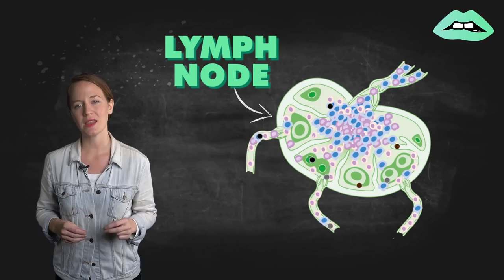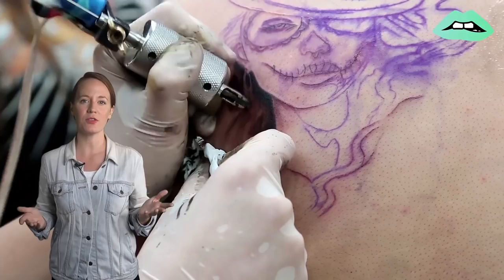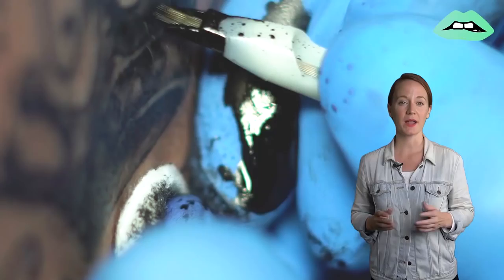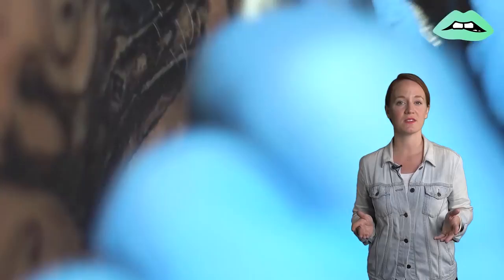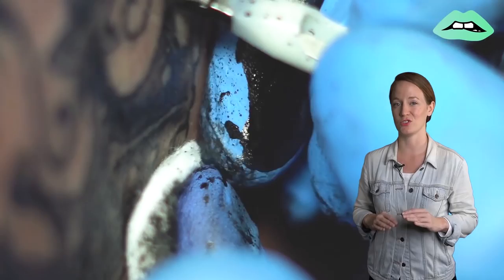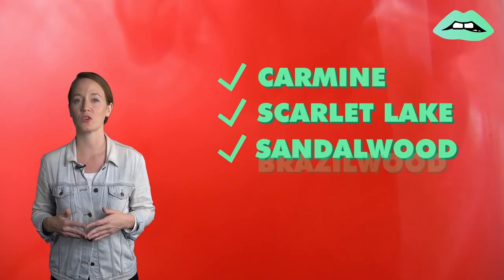So what's a health-minded person to do if they want to get a tattoo? Well, you should avoid getting a tattoo with colors derived from heavy metals. Black may be the safest permanent tattoo ink, and doctors recommend asking for black tattoo ink made of just carbon. And for red, try to find a parlor that works with non-metallic organic pigments made of things like carmine, scarlet lake, sandalwood, or brazilwood.